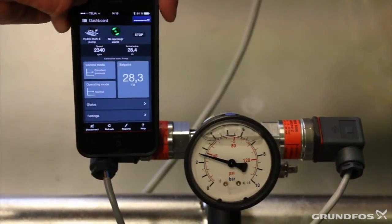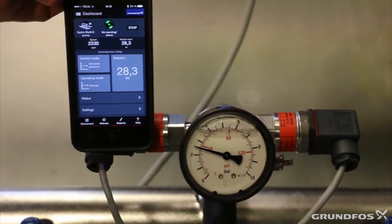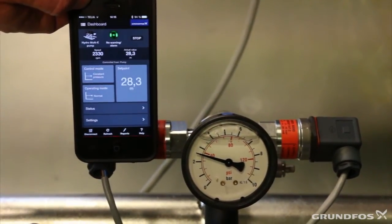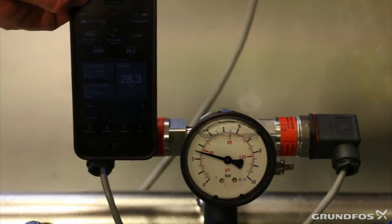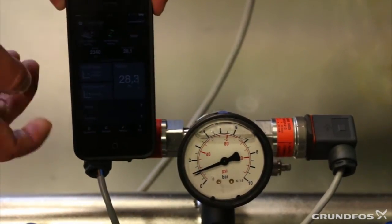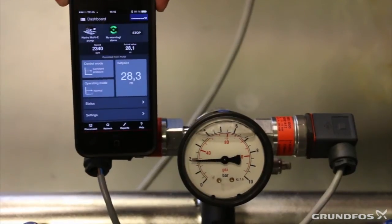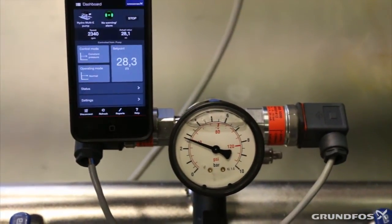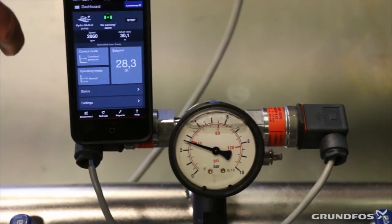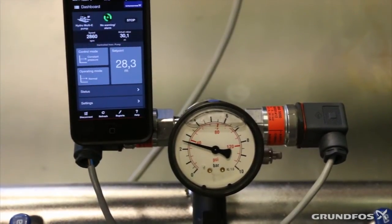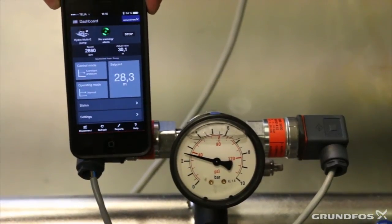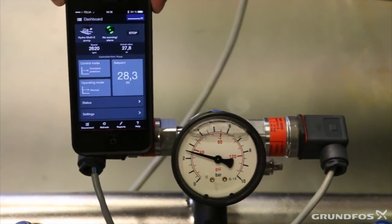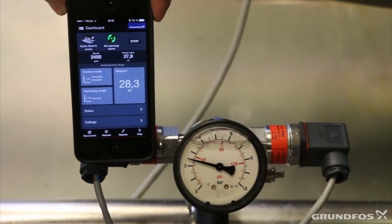Now let's increase the water flow by opening a valve and simulating that more people are in need of water. As we can see on the pressure gauge the pressure was dropping. The actual value is now 28.1. It is increasing as the pump is speeding up. The pump will reduce the speed again and try to control the pressure to the set point of 28.3 meters.